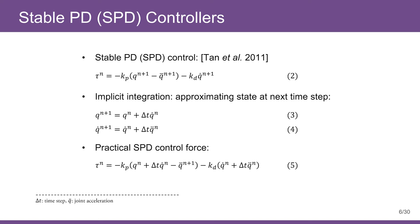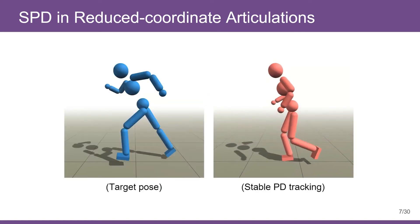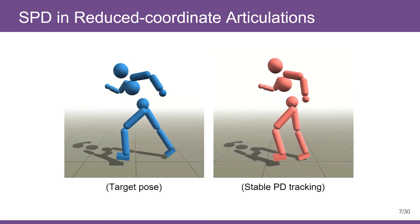By substituting equation 3 and 4 into equation 2, we get the final practical SPD formula shown in equation 5. In practice, this SPD formulation allows for fairly high gains at large time steps. SPD has been widely adopted to control articulated characters to achieve stable tracking control.